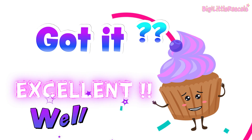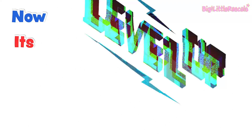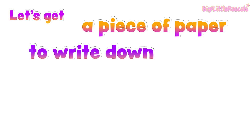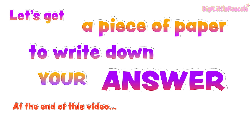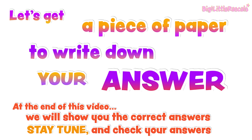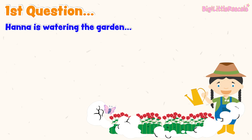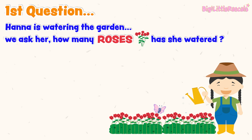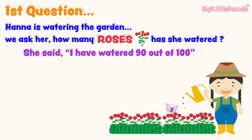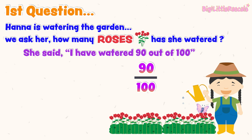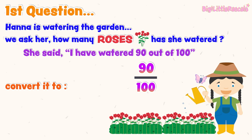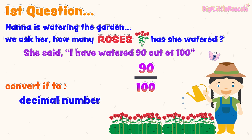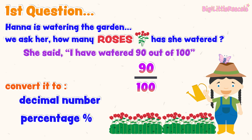Got it? Now it's time for our quiz. Ready? Get a paper and a pen and write down your answer. At the end of the video we will show you the answer, so stay tuned to check your answer. First question: Hannah is watering the rose garden. We asked her how many roses she has watered. She said, 'I have watered 90 out of 100 roses.' Hannah asks us to help her convert 90 out of 100 to decimal number, and then convert it to percentage. Let's help Hannah and write your answer on paper. We will check the answer together at the end of this video.